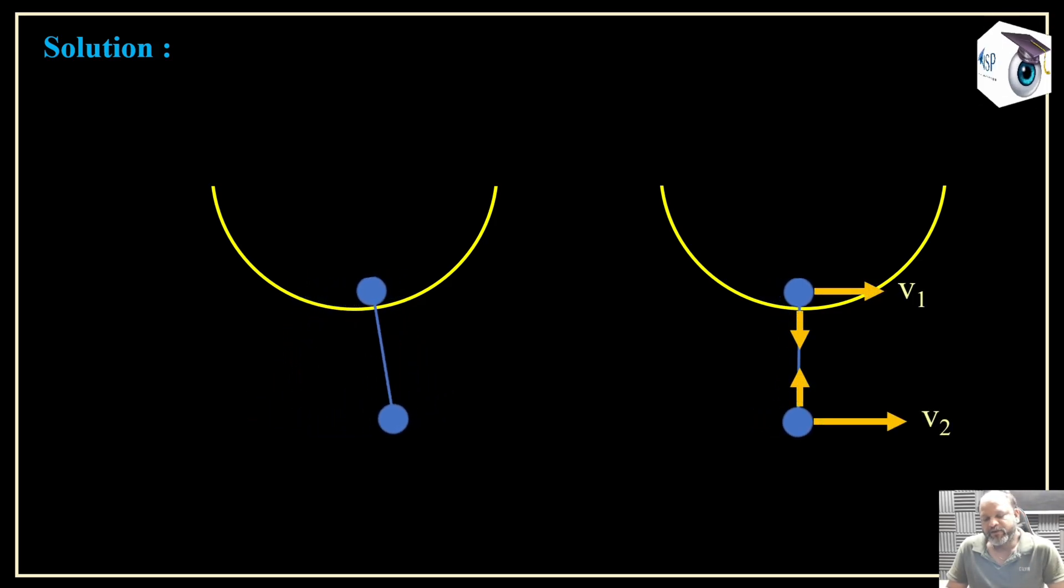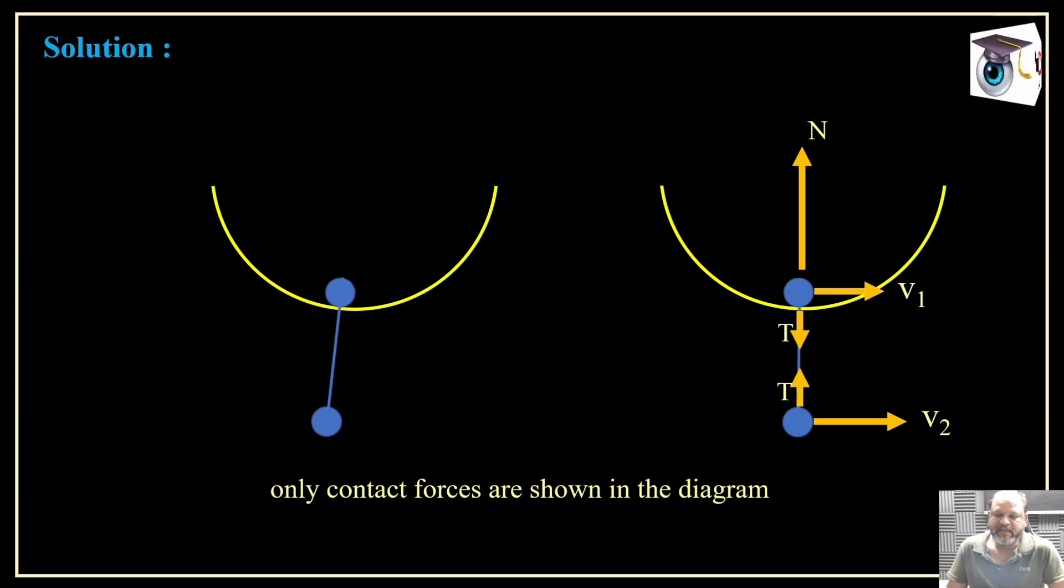The ball is having velocity v1 and v2, tension forces are acting, and there is normal reaction on the first ball. Whereas if you see on the second ball, there is only tension as a contact force. We are showing only contact forces in this diagram. I hope this is clear to you.